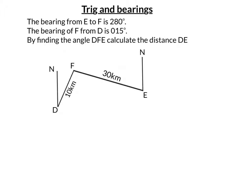So the first thing is the bearing from E to F is 280 degrees. So the bearing from E. So I'm going to start at E and I'm going to go clockwise around from north. So this angle here is 280 degrees. And the bearing of F from D.